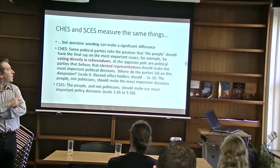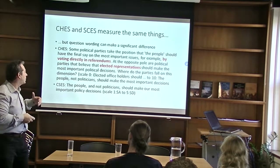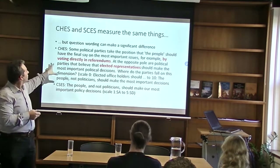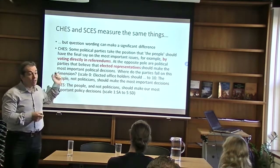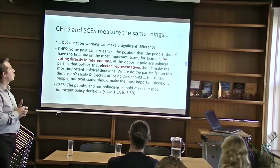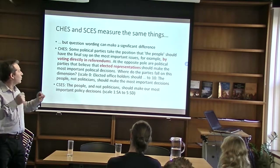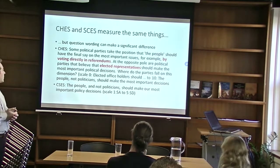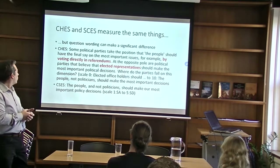However, there are some caveats. One is that the question wording can make a significant difference. The Chapel Hill Expert Survey version of the question is always long because it is targeted towards experts, who are supposed to follow difficult and long questions. It provides examples — for instance, it says 'by voting directly in referendums' when describing that people should have the final say on the most important issues. At the opposite pole, there is a clear alternative: elected representatives should make the final decisions. In CSCS, a very similar but much more simple item reads: 'The people and non-politicians should make the most important policy decisions,' without a scale that presents an alternative.